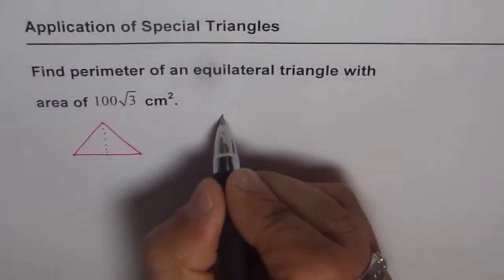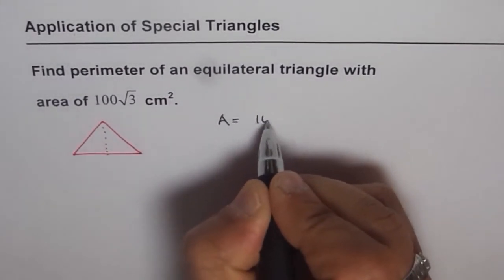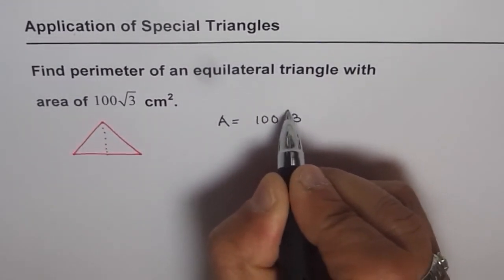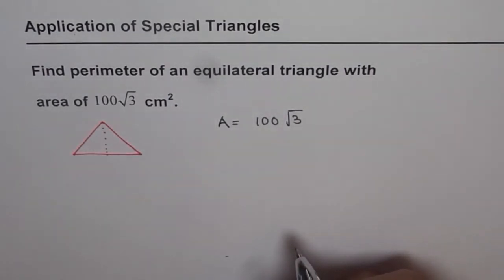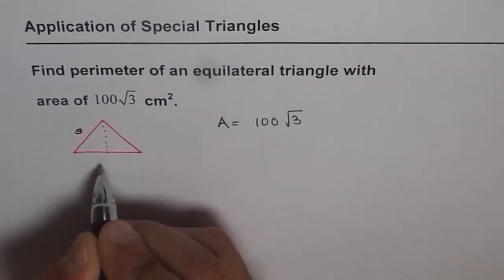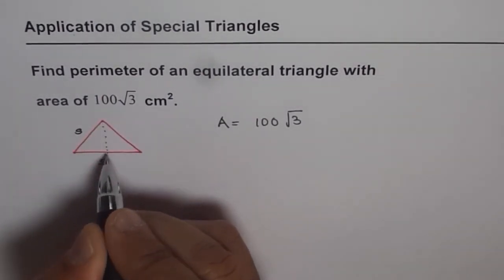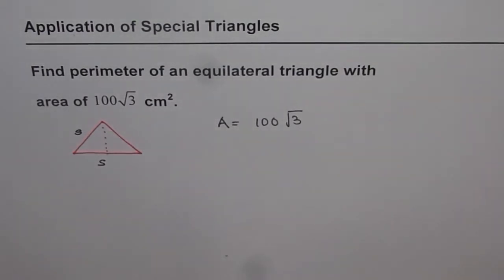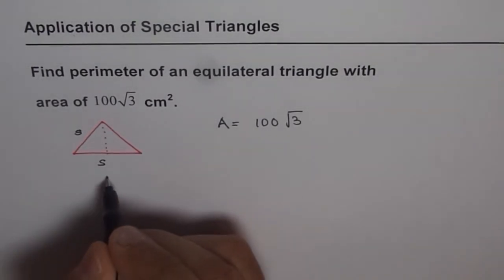So area of this triangle is equal to 100√3. Now what is the area of an equilateral triangle? That is what you need to figure out. If the sides are s, then what is going to be the height? Well, we can use special triangles to find the height.